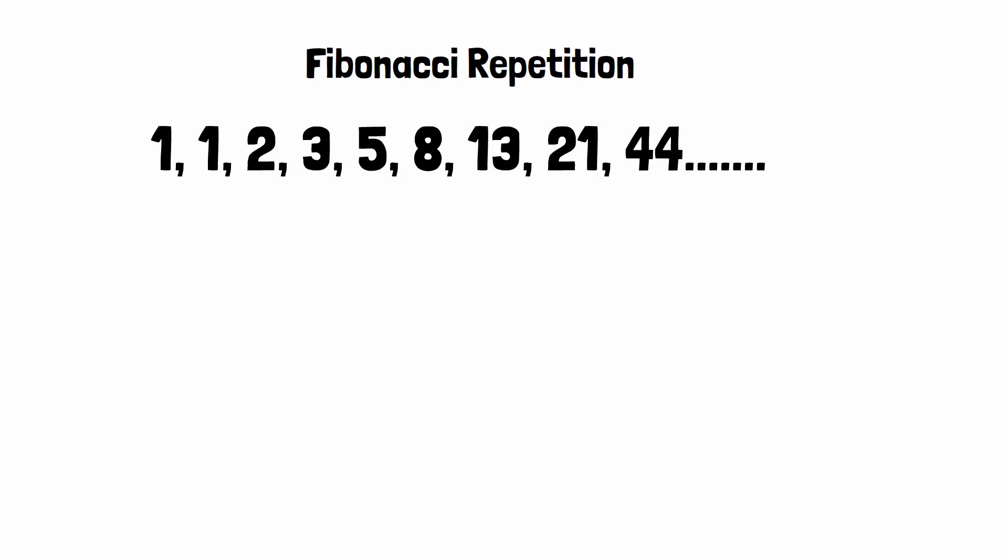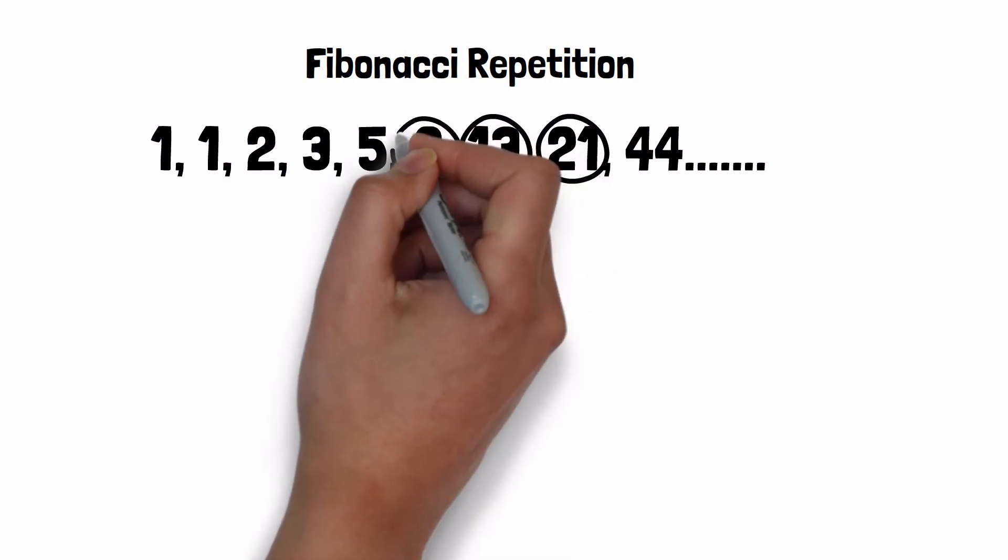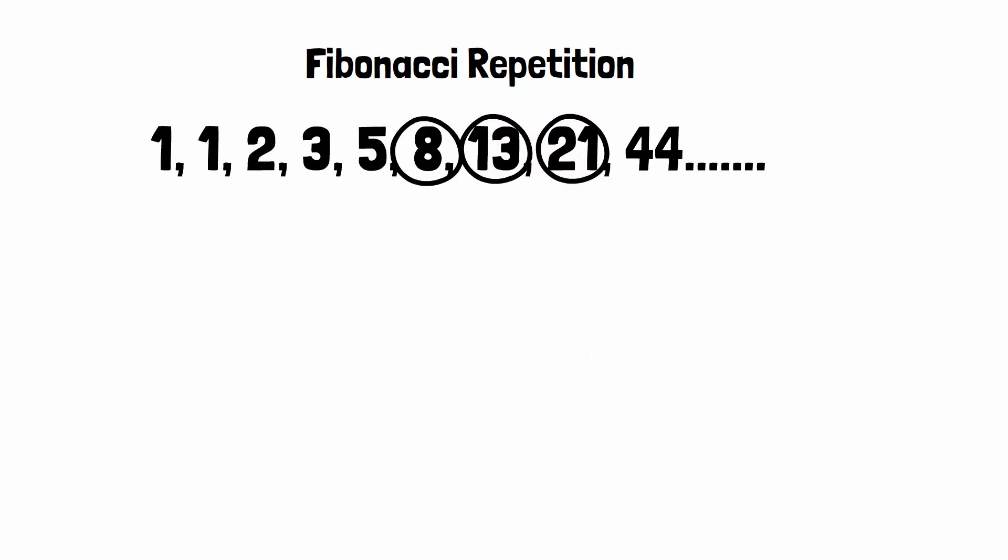Here is a Fibonacci sequence. In this sequence, you get the subsequent numbers by adding the just preceding two numbers. That is, you get 13 by adding 8 and 5. You get 21 by adding 13 and 8 and so on. You can use this sequence to make the spaced repetition.